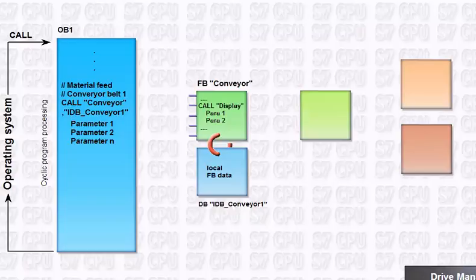A function, or FC, is used for programming frequently recurring automation functions. It can be parameterized and can return an optional return value to the calling block. Functions generally do not store any internal information beyond their run time. They only communicate via their input and output parameters.